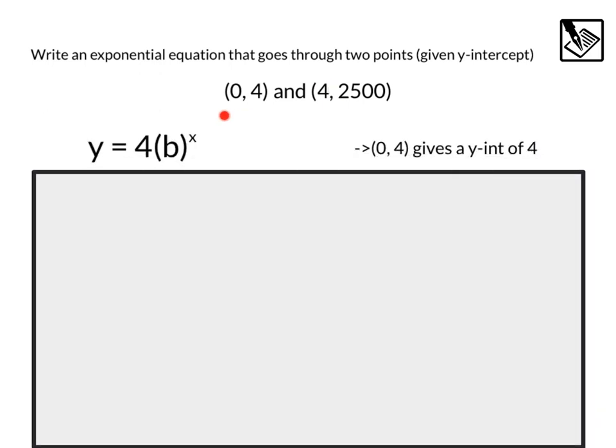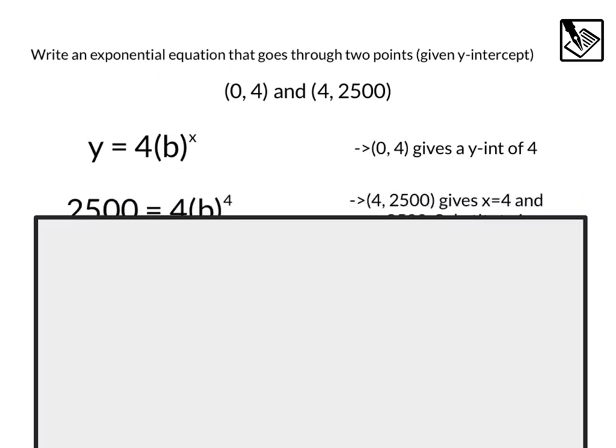So first off, I notice this point (0, 4) is our y-intercept. That means in our equation, y equals a times b to the x, we can replace the a with the 4. That's like our y-intercept, kind of like what we've been doing in class.